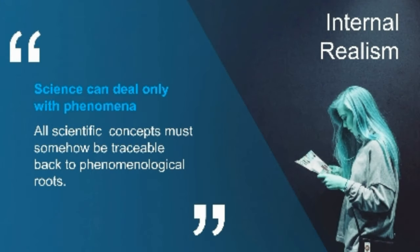Science can deal only with phenomena. According to Peirce, all scientific concepts must somehow be traceable back to phenomenological roots. What is outside of logical possibility has nothing to do with science. As for his metaphysical position, he appeared to be a realist — he himself labeled his view as a realist of Kantian empirical type. And since it is connected to phenomenological roots, it must therefore be a kind of internal realism. In the medieval sense, he is really an anti-nominalist.